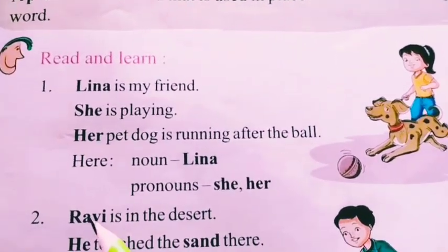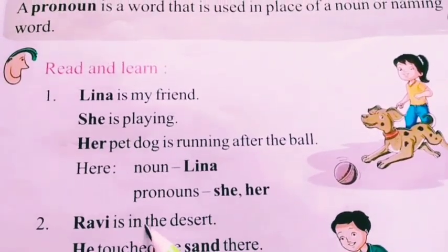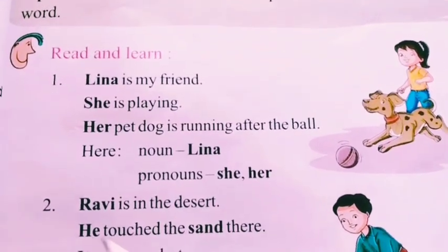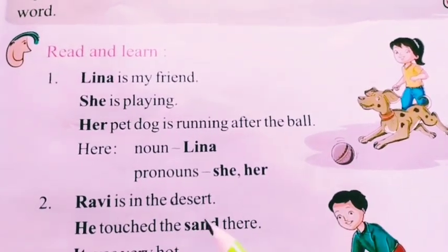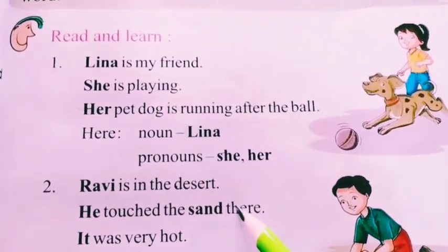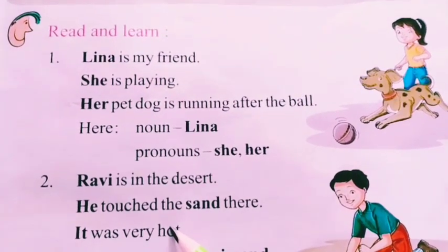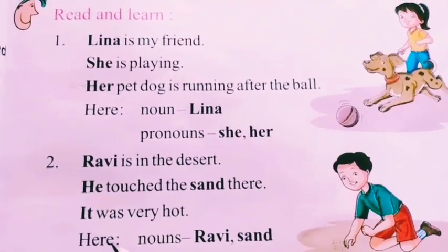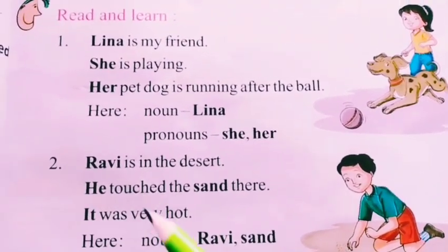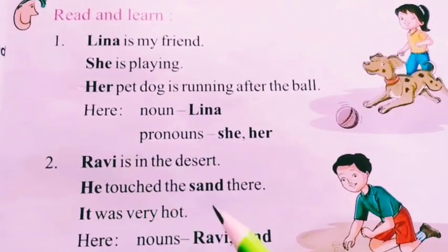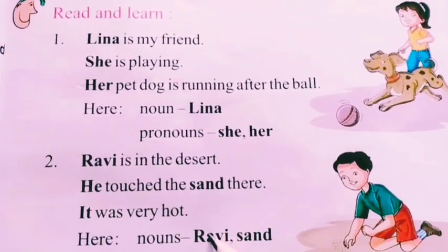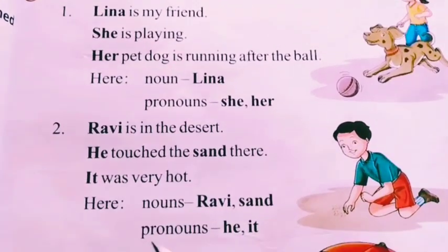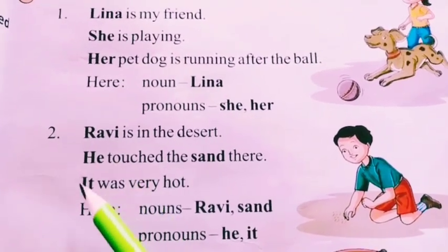Second point: Ravi is in the desert. He touched the sand there. It was very hot. The nouns are Ravi and sand. What are the pronouns? He.